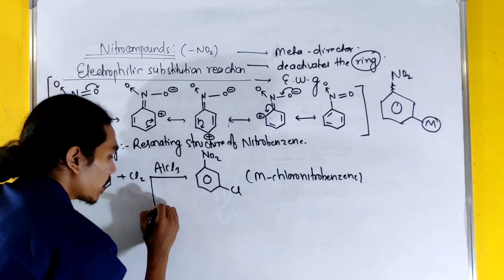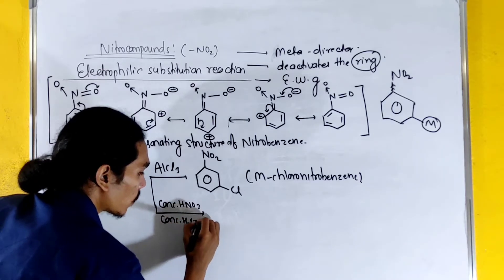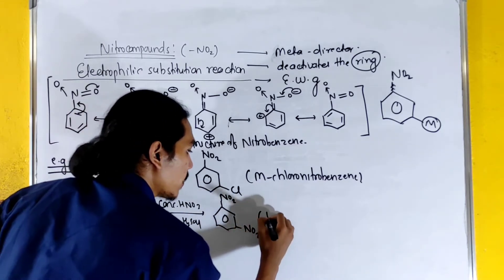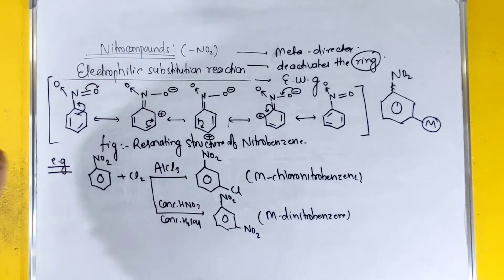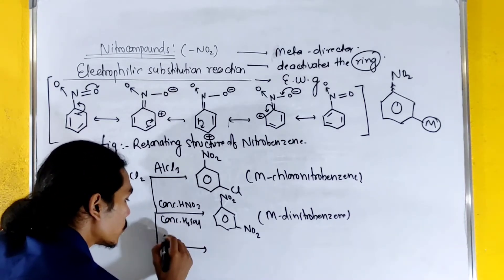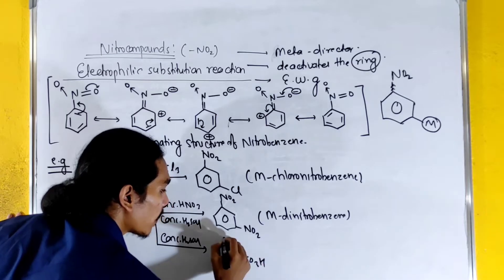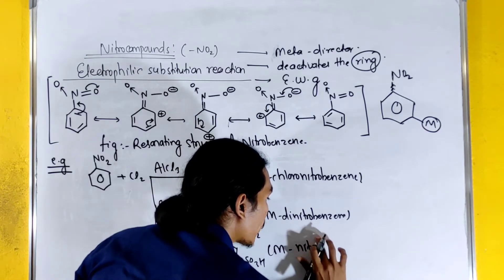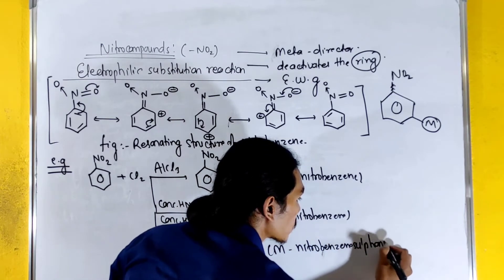Next is nitration. Using concentrated HNO3 and concentrated H2SO4, we get dinitrobenzene. Then there is sulfonation using concentrated H2SO4, which gives an SO3H group — a sulfonic acid product at the meta position.